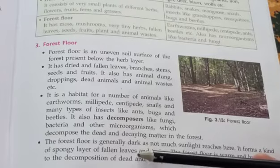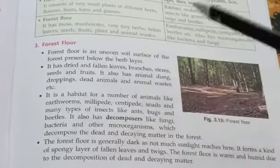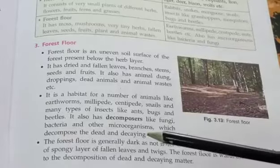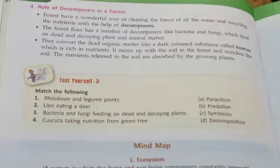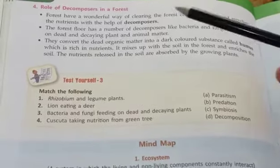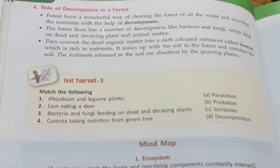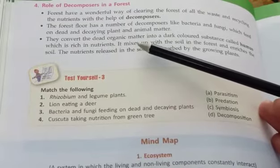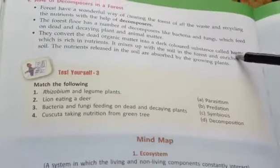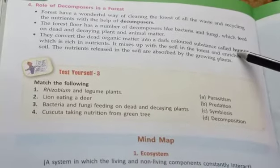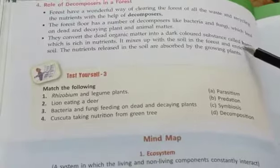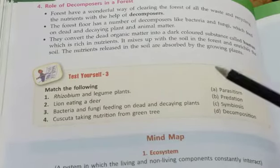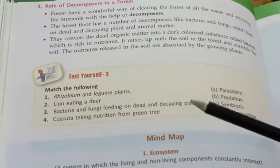The fauna of the forest floor includes earthworms, dead animals, and animal waste — these things are decomposed and converted into nutrients. The role of decomposers in the forest is to decompose dead and decaying matter into nutrients. The humus formed is rich in nutrients which help plants to grow. I hope everything is clear. The chapter ends here.